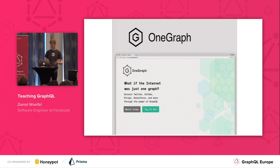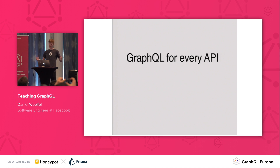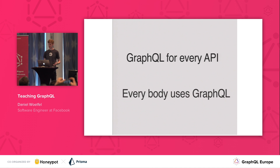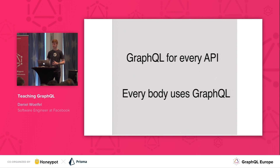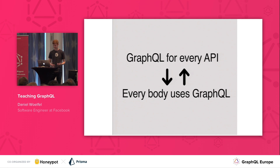So why is the OneGraph thing relevant to this talk? Well, if you're going to build GraphQL for everything, you also have to get everybody to use GraphQL — everybody has to love it for this to be successful. GraphQL APIs have to exist before people can get excited about them, and people have to be excited about them before there's really the demand to build them. That explains part of my motivation for wanting to really teach people how to use GraphQL.